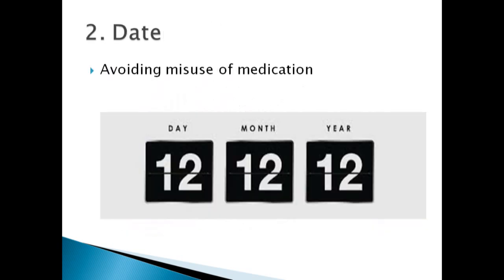Moving forward to the next part, which is the date. Every prescription generally bears the date on which the particular medicines were prescribed. By putting the date on the prescription, the misuse of drugs can be avoided. This is particularly helpful in the case of habit forming drugs. In case of chronic diseases like asthma, diabetes, and hypertension, the same prescription is to be repeated over a longer period, so the prescription date will help maintain the proper treatment and course of chronic diseases.